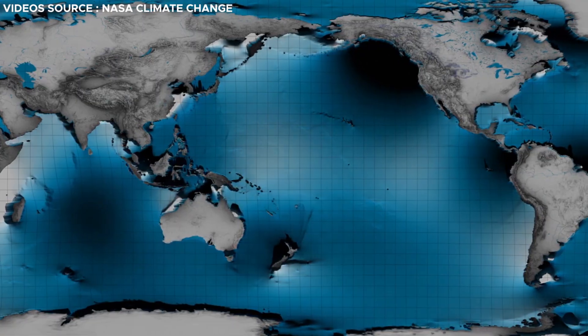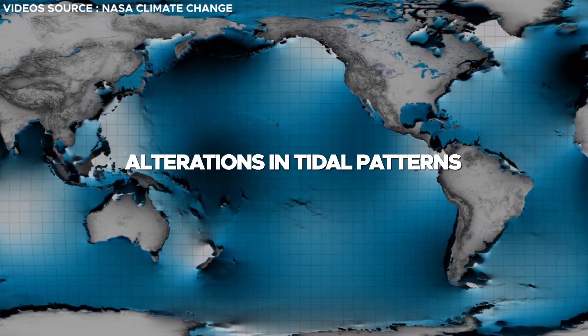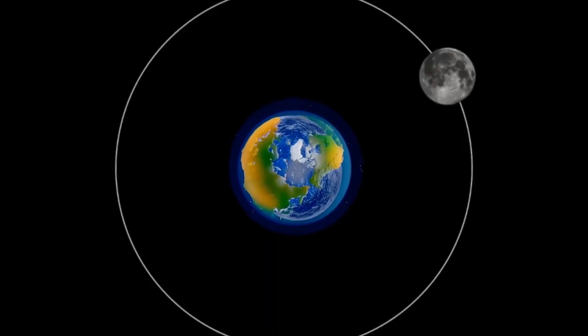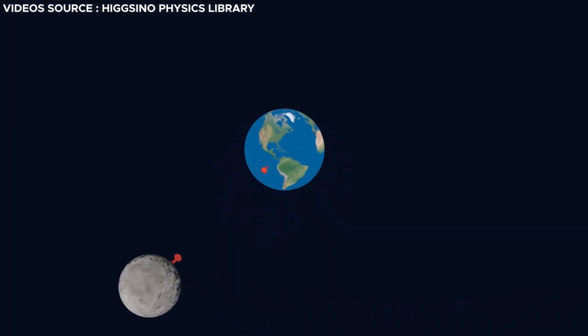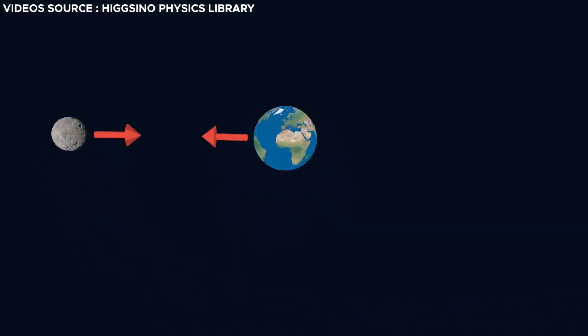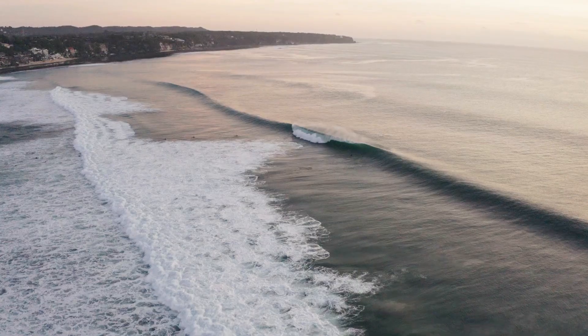The absence of the moon would bring about prominent alterations in tidal patterns. The moon's gravitational pull is instrumental in creating tides, a phenomenon driven by the Earth's rotation and the moon's gravitational influence on the oceans.